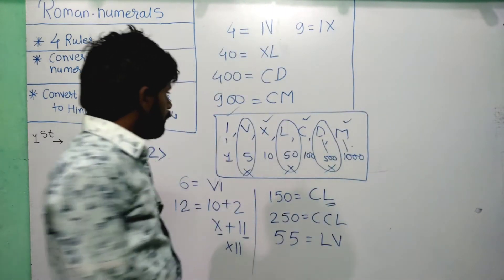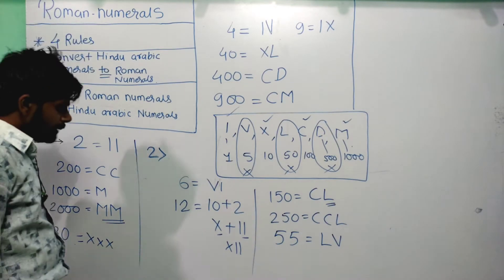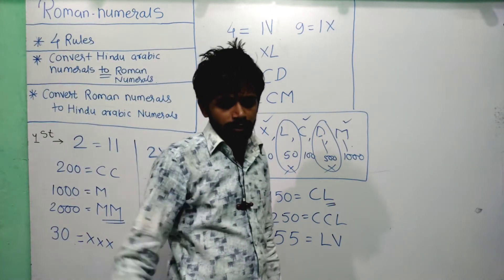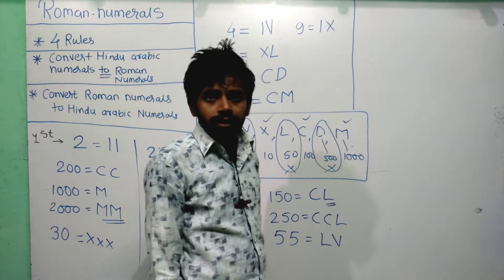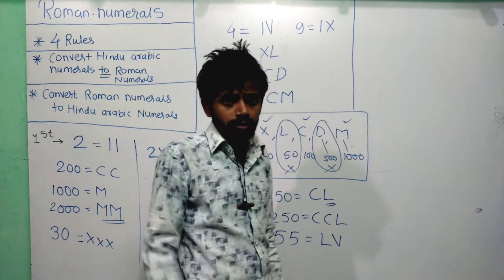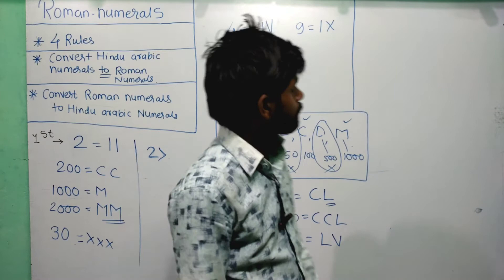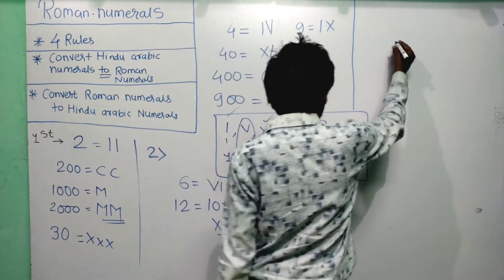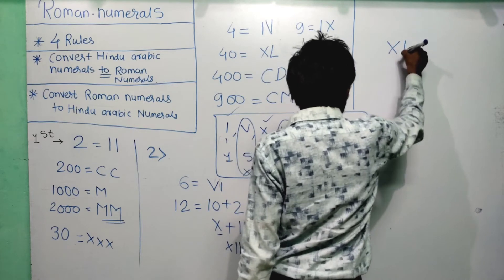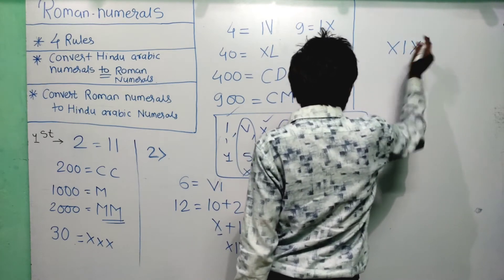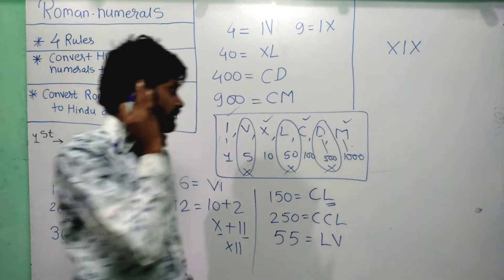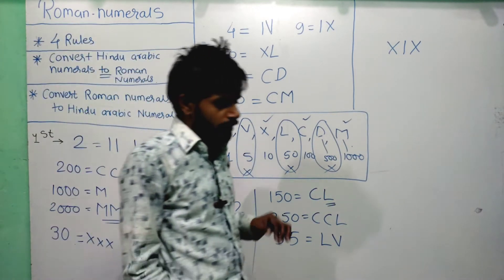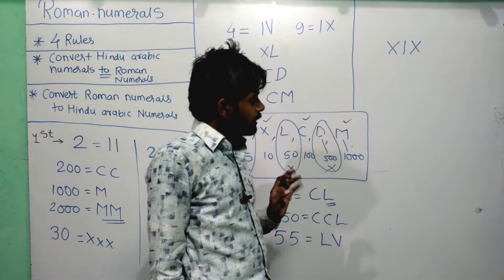Now the fourth rule. Suppose you have XIX. Here a smaller Roman numeral I is placed in between two greater numerals X and X. The question arises: do you add I to the left X, or subtract I from the right X? The fourth rule addresses exactly this kind of situation.